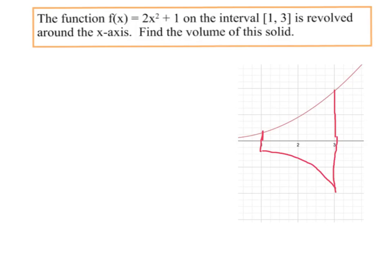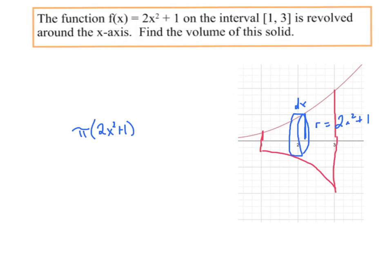As we revolve it, you have cylinders that look kind of like that. Remember we consider the width to be dx and we get the radius by evaluating the function, so the radius is equal to 2x² + 1. What we're essentially doing here is finding the volume of the cylinder, which is π r² multiplied by the height.